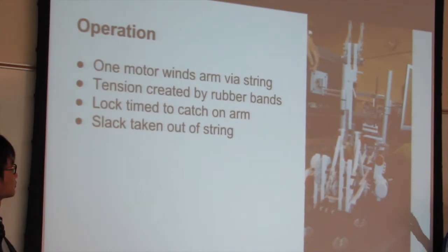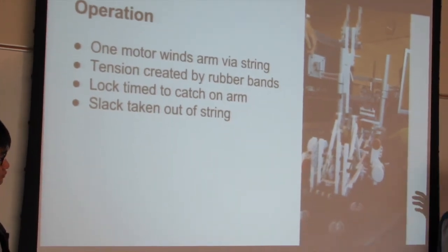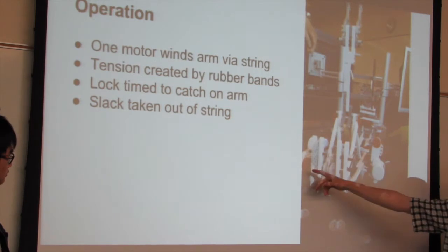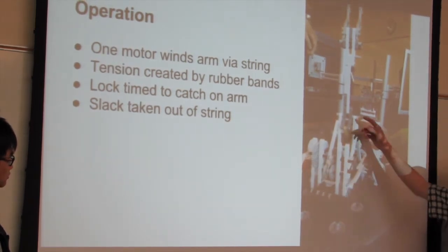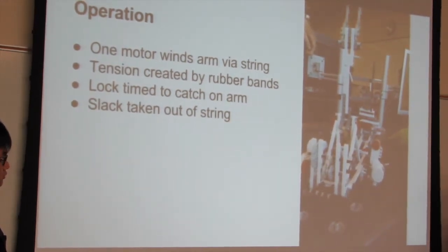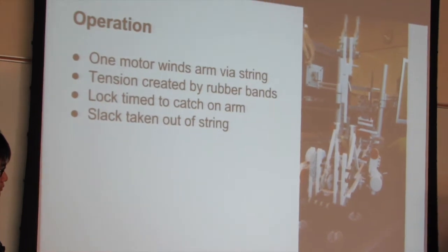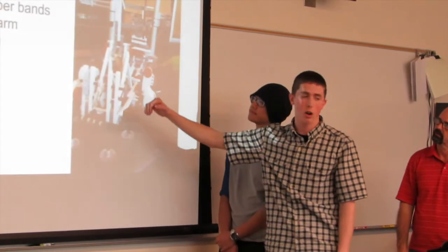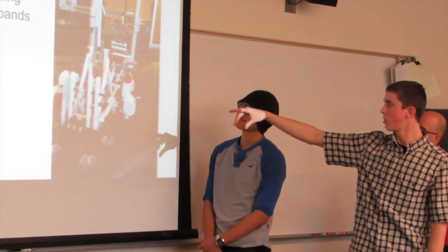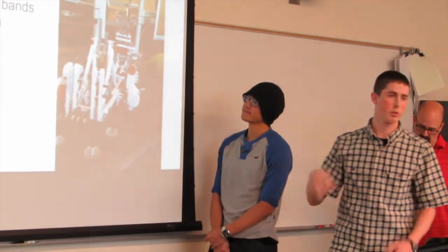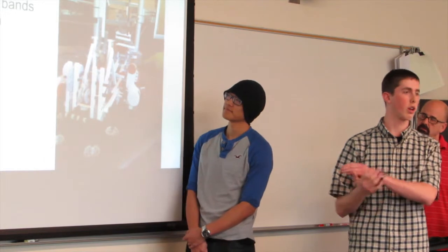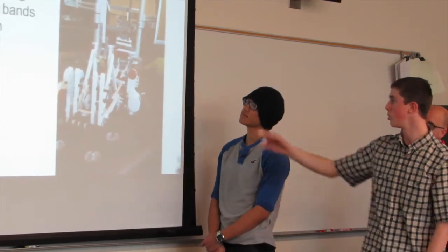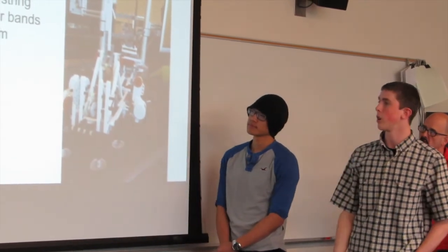Basically, the main body of our robot, like I said, one motor winds a string, and you can kind of see it here. It winds this string that runs up and connects to the arm and actually pulls it down, and there's tension on that string. So once it pulls it down, this motor actually locks the arm down, and that same motor that pulls the string unwinds it, basically taking all the slack out of the string, allowing it to actually shoot when this locker is disengaged.